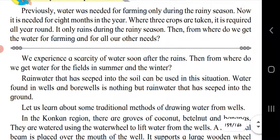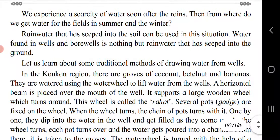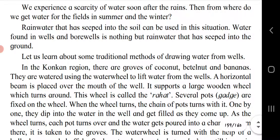Use your brain power: Previously, water was needed for farming only during the rainy season. Now it is needed for eight months of the year, and where three crops are taken it is required all year round. It only rains during the rainy season, so where do we get water for farming and all other needs? Farmers using pumps lift water even after the rainy season, and water stored underground gets used up rapidly. Bore wells can be used to access underground water when needed after the rainy season.